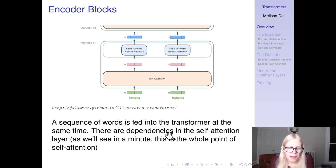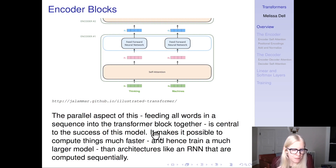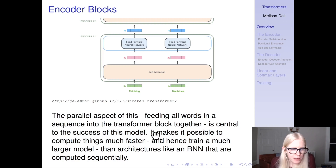With the transformer, you're feeding in your sequence of text — for instance, the sentence you want to translate — all at the same time. There are going to be dependencies in the self-attention layer, and this is the whole point of self-attention. The parallel aspect — feeding in the sequence together — is going to be central to the success of the model. It makes it possible to compute things much faster and hence train a much larger model than architectures like an RNN that are computed sequentially.